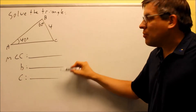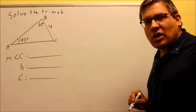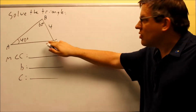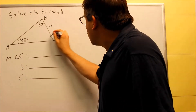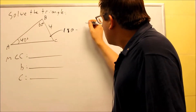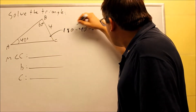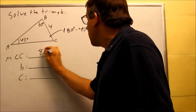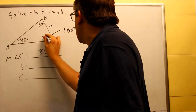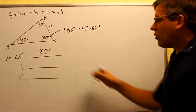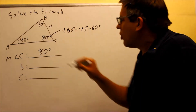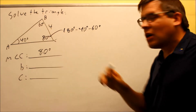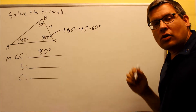The first thing we're going to do before any Law of Sines is find the third angle. Since we have two out of three angles, we can find angle C by doing 180 minus 40 minus 60, which gives us 80 degrees. We need this angle because when we find side C later, we need the angle across from it to set up the Law of Sines.